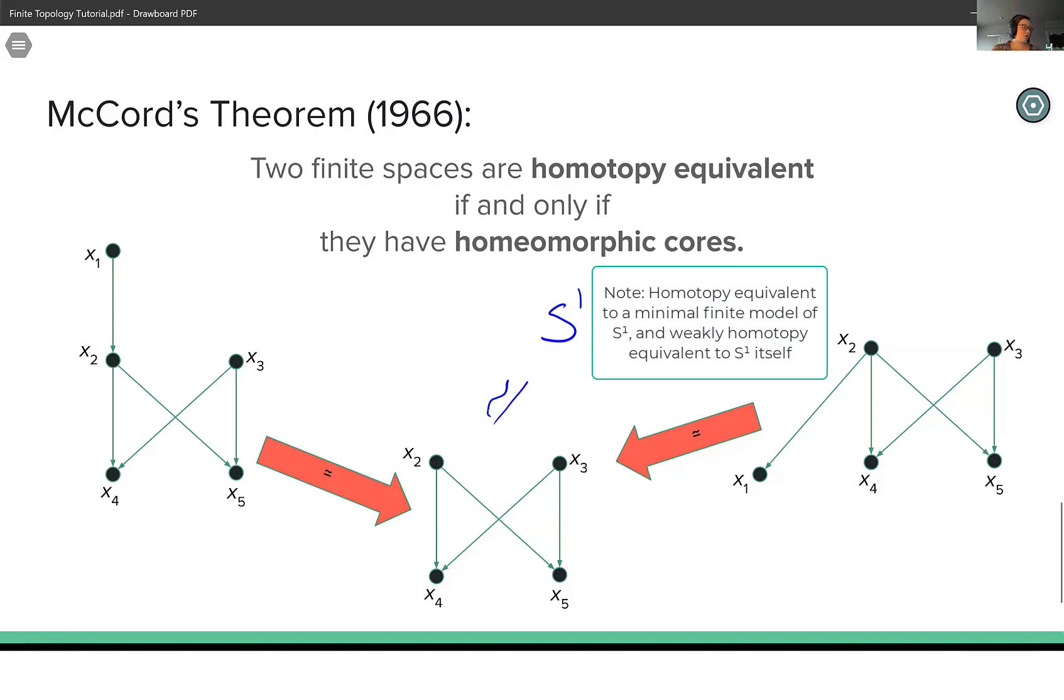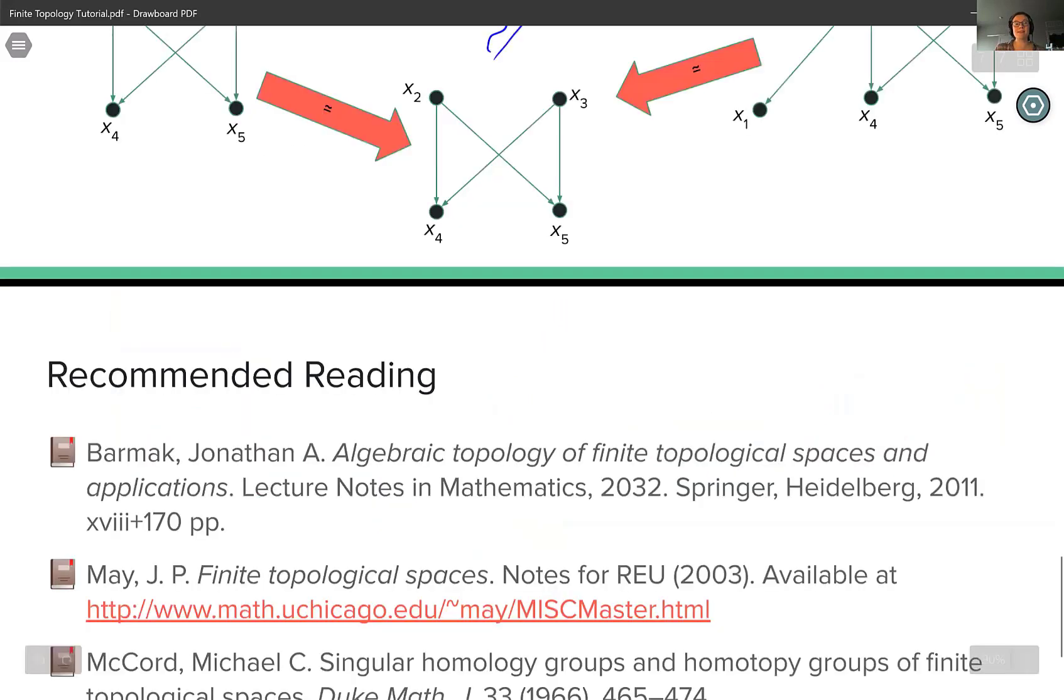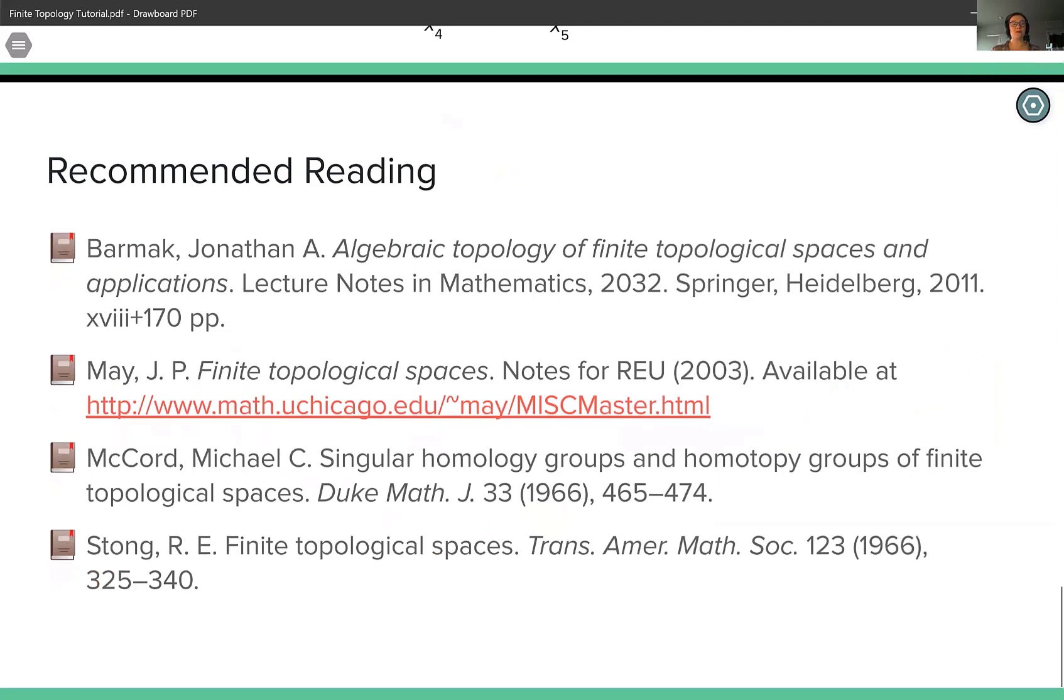And this is useful for proofs where you want to compare finite spaces to other spaces that it might be weakly homotopy equivalent to, like simplicial complexes, etc. So for more on this, I recommend any of these four sources as a great place to get started on finite topological spaces. Thank you.